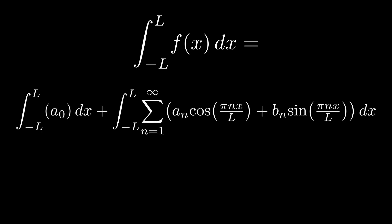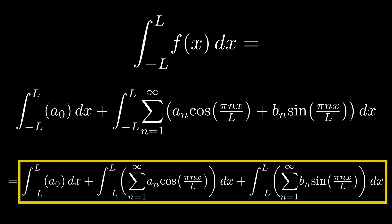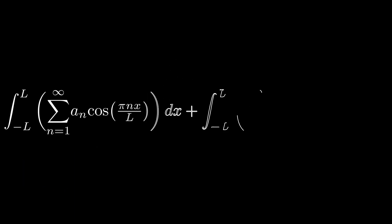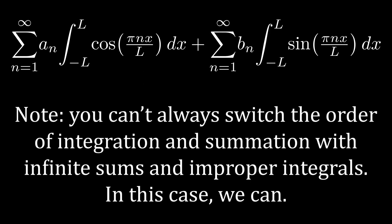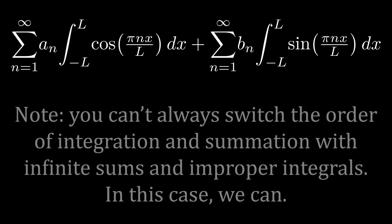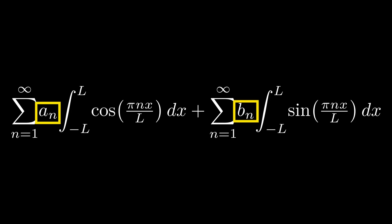We can split up the right hand side of the equation into three different integrals, all going from negative l to l. Let's first tackle the integrals with the sinusoids. Notice here that we can switch the order of integration and summation, and take out the constant terms a sub n and b sub n. Remember that these constant terms depend on n, so they should still remain within the sum.